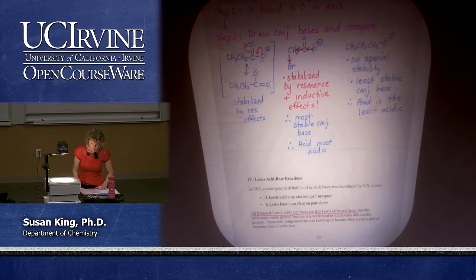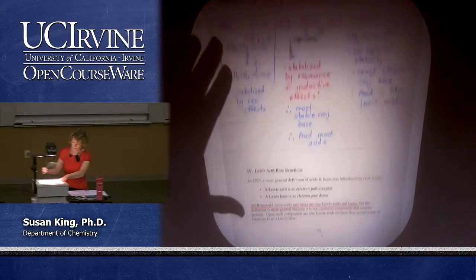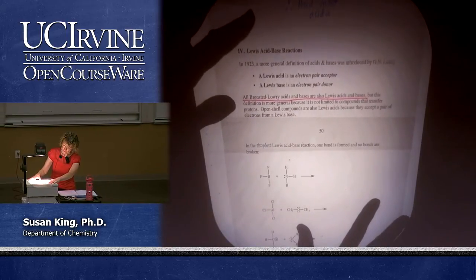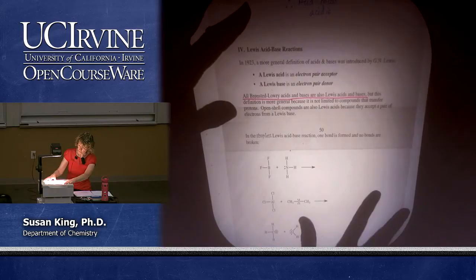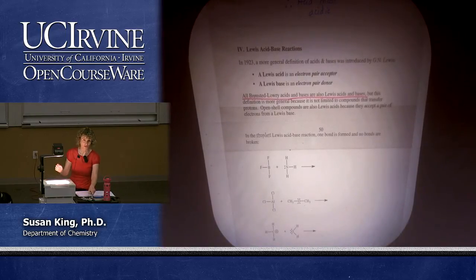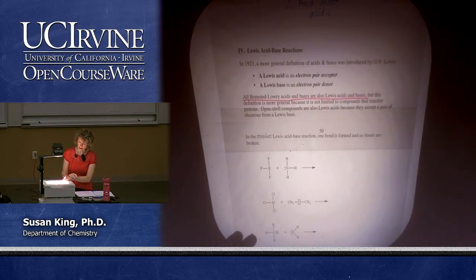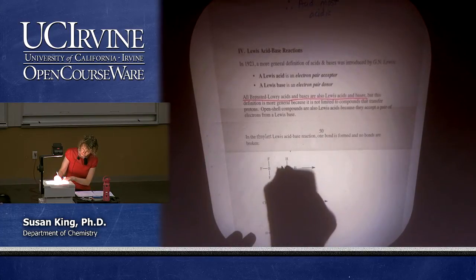Open shell compounds are the best example of Lewis acids that are not Brønsted acids. I'm going to give you a couple of examples. In the simplest Lewis acid-base reaction, one bond is formed and no bonds are broken — this is probably the type you would have seen in general chemistry. We have boron trifluoride, an open shell compound that does not have an octet, and it likes to accept a pair of electrons from an atom that has a lone pair.